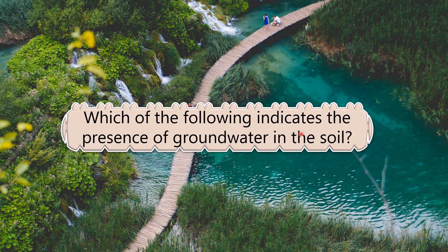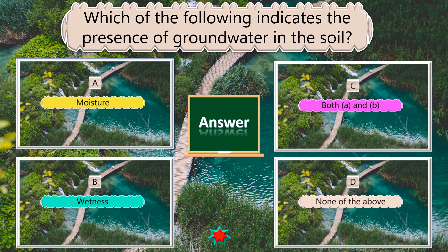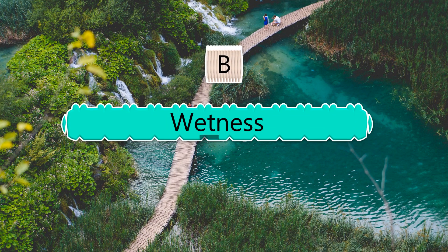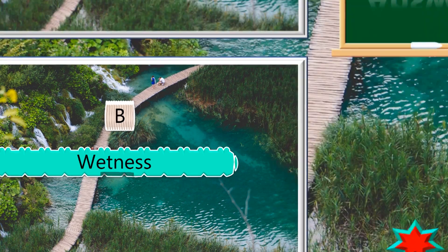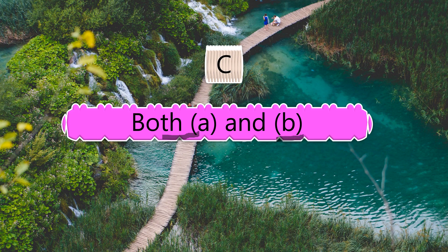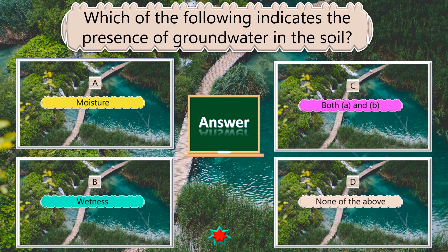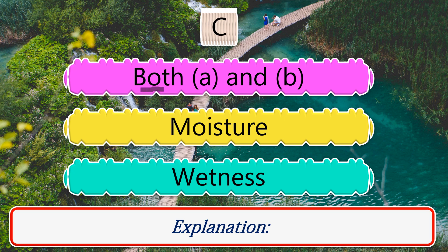Which of the following indicates the presence of groundwater in the soil? Options: moisture, wetness, both A and B, none of the above. The answer is both A and B — that is, moisture and wetness.